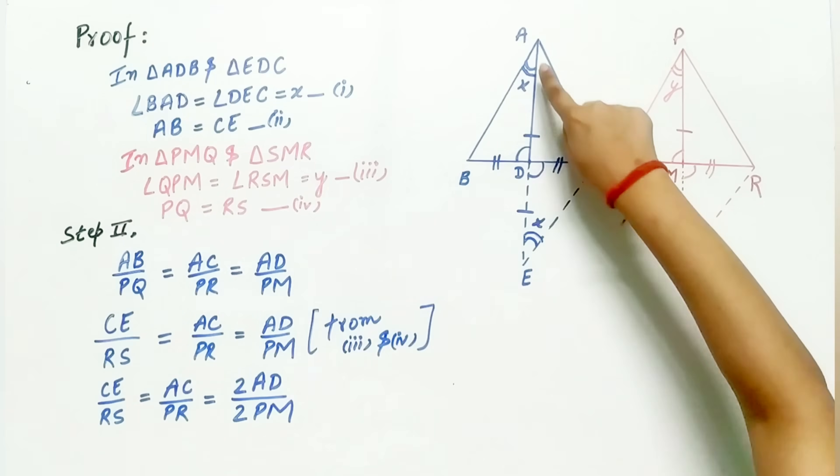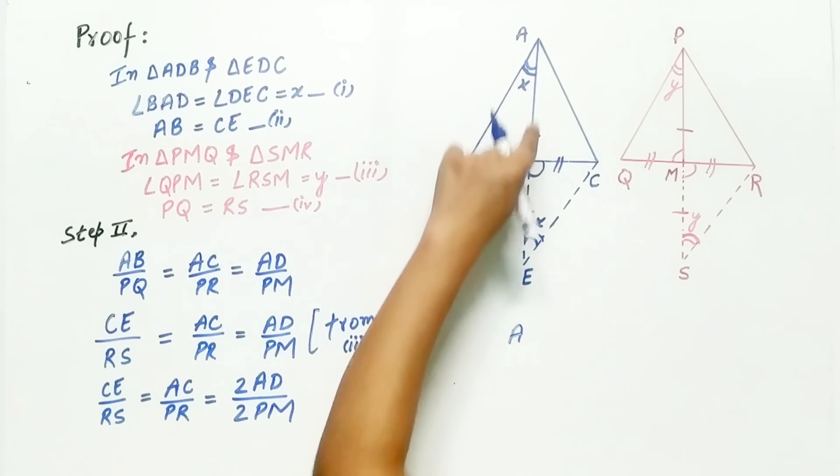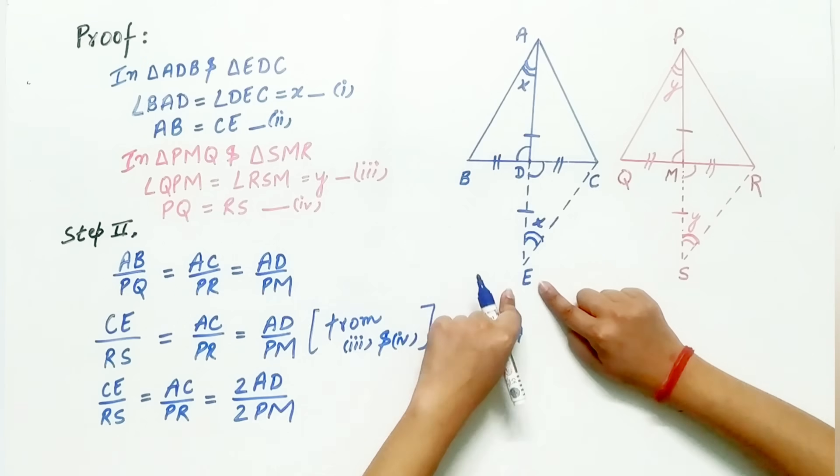Now, twice of AD is equal to AE. Remember, during construction, we have extended AD to point E such that AD is equal to DE.